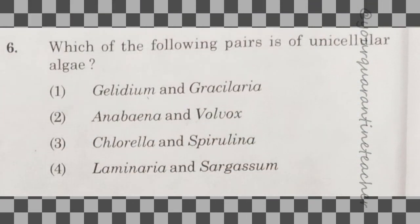6th question: which of the following pairs is of unicellular algae? The answer is option 3 — Chlorella and Spirulina.